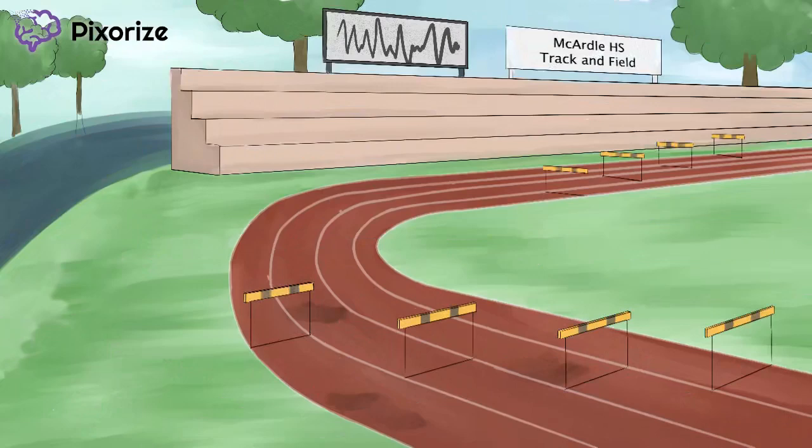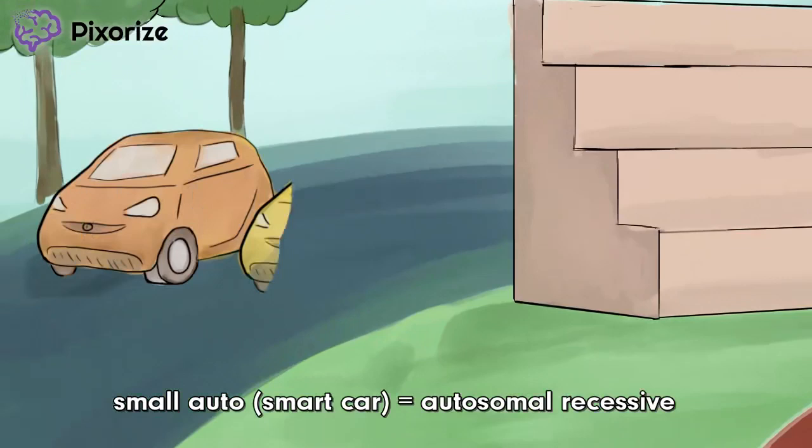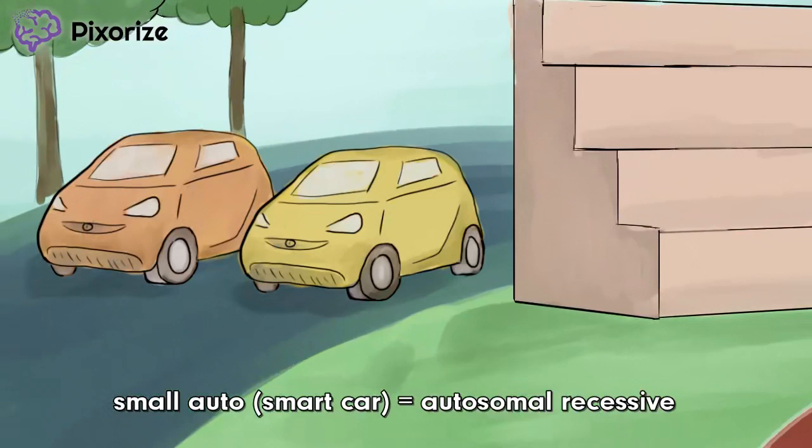Take a look at these small smart cars parked outside the stadium. Small automobiles like these smart cars are a recurring symbol for autosomal recessive inheritance. One of the most common ways you may be tested about this disease goes something like this: given a father with symptoms of McArdle disease, what is the probability of a future child being a carrier? These small smart cars should help you remember that McArdle disease is inherited in an autosomal recessive pattern.